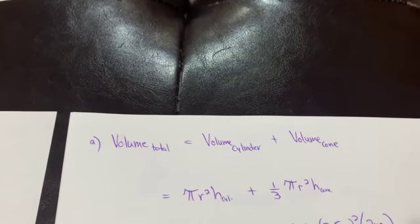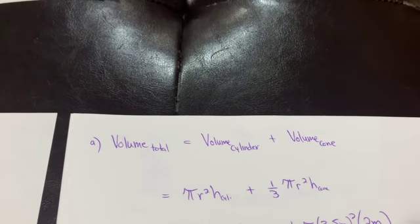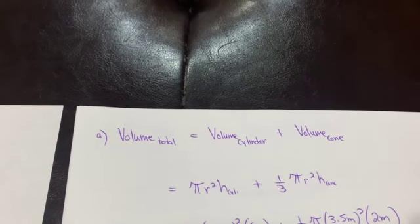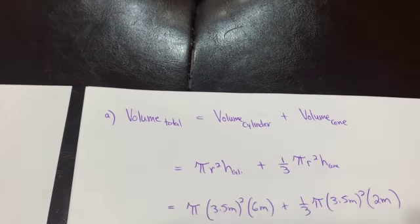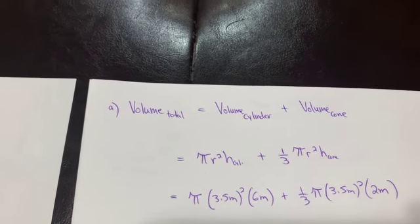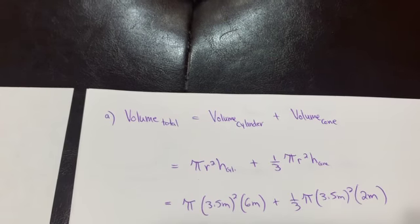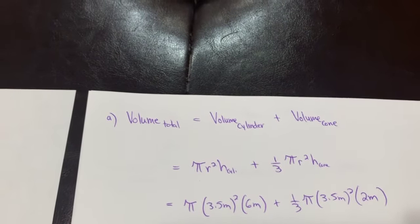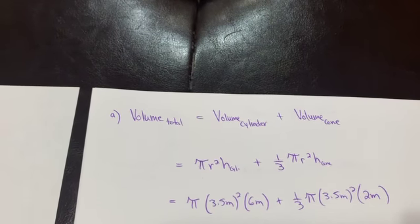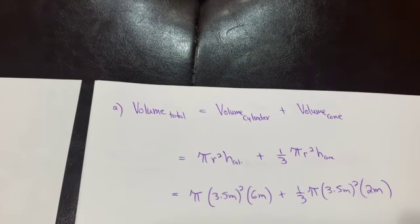They have the same radius, but to be careful, they don't have the same height. And so I put a little notation there, the height of the cylinder, the height of the cone. And so then it's just crunching numbers, pi times 3.5 squared times 6 for the volume of the cylinder. 1 third pi times 3.5 squared times 2 for the volume of the much smaller cone.